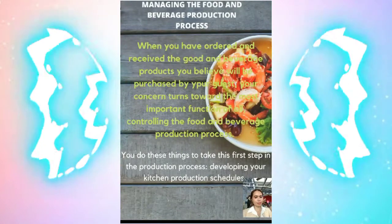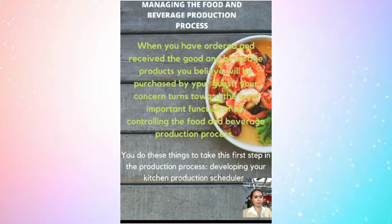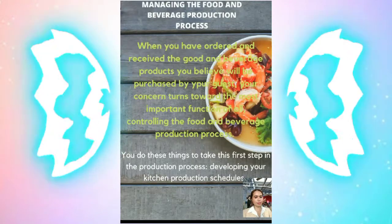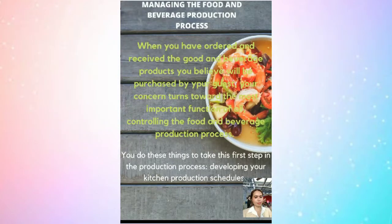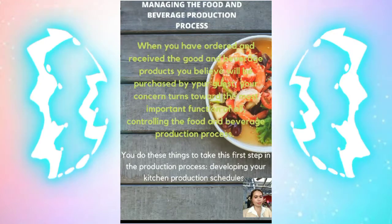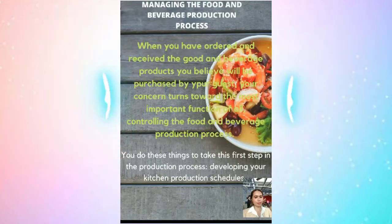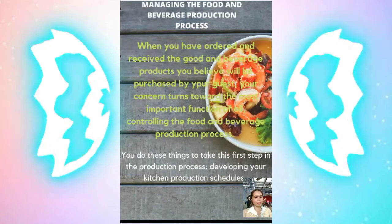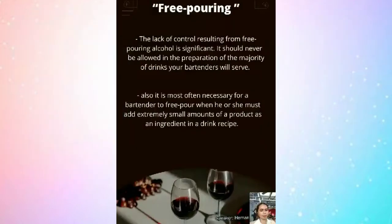When you have ordered and received the food and beverage products you believe will be purchased by your guests, your concerns turn towards the most important function of all: controlling the food and beverage production process. You do this by taking the first step in the production process — developing your kitchen production schedules.